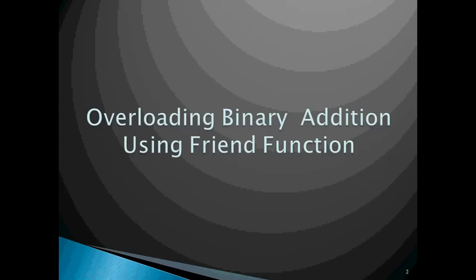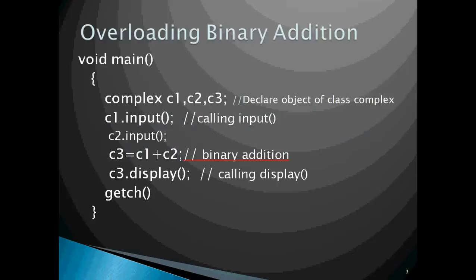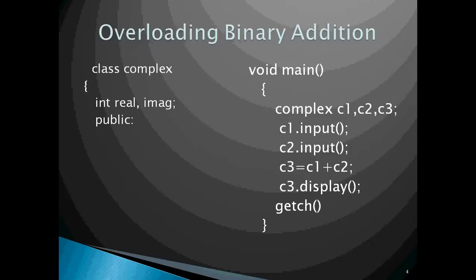We would be adding using binary addition for this purpose. Here we have a look at the main function: Complex c1, c2, c3 — Complex is the name of the class with three objects. The input function is for getting the values of the data members of the class complex. The statement c3 = c1 + c2 is for addition of two objects, and in this program we would be performing this addition using a friend function. Then we have the display function, which is used to display the complex number.